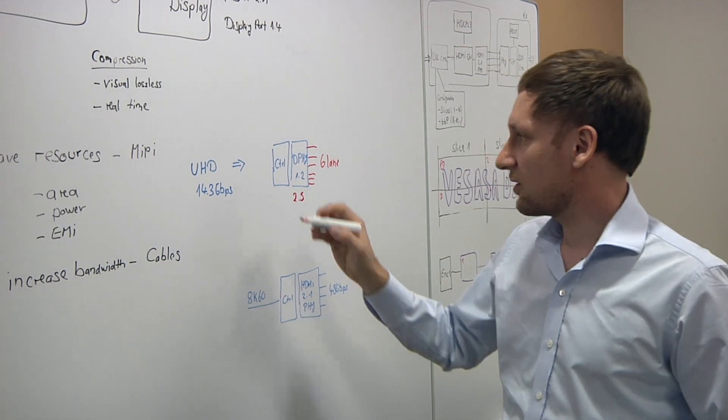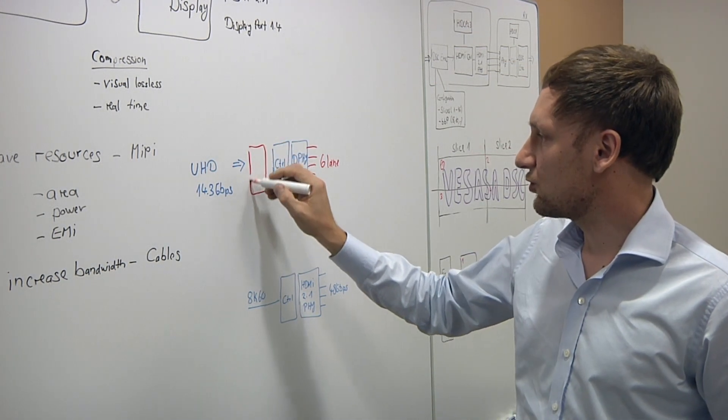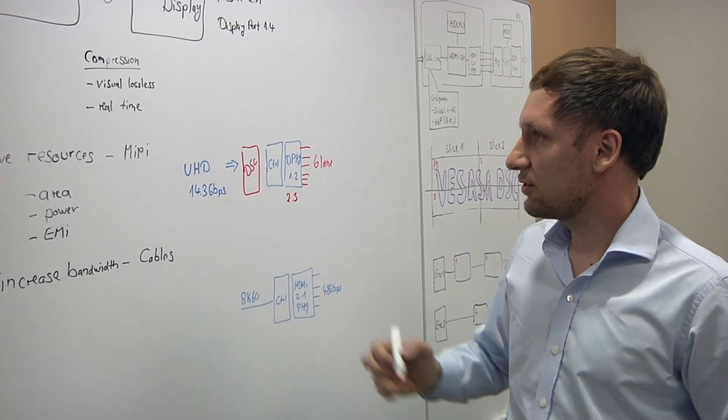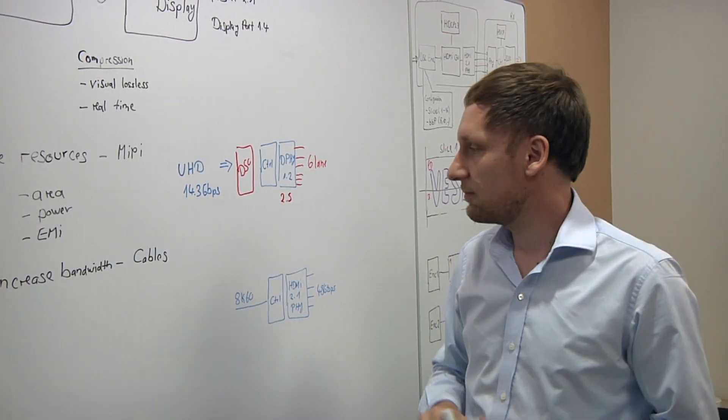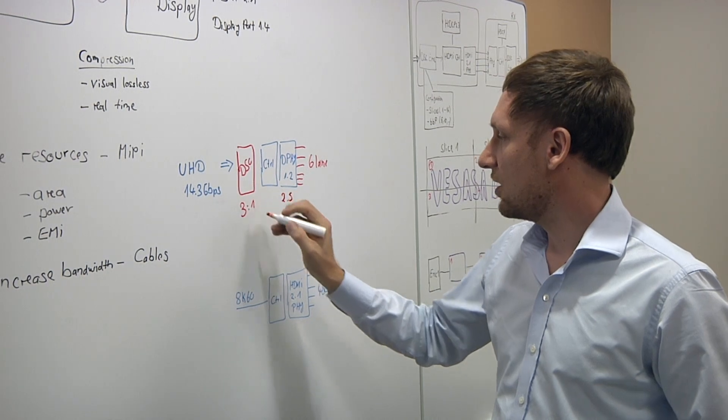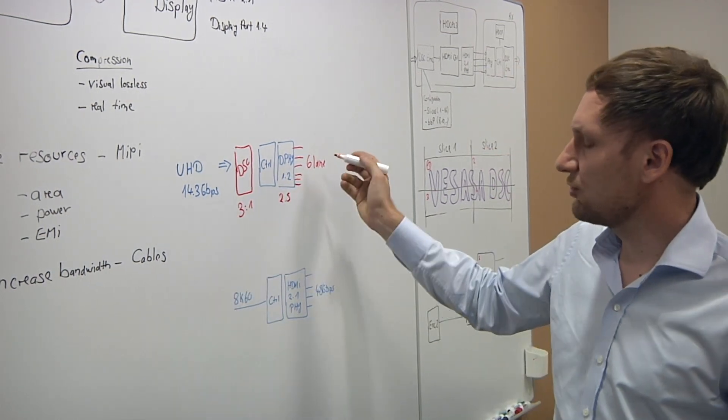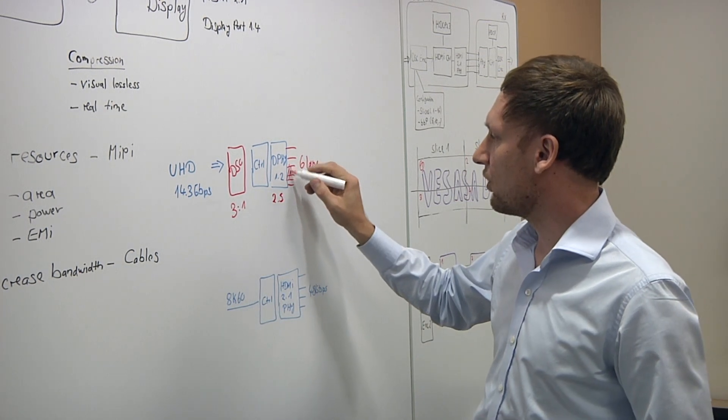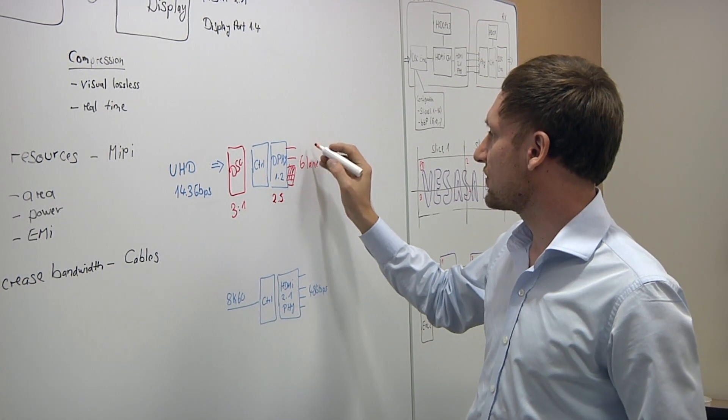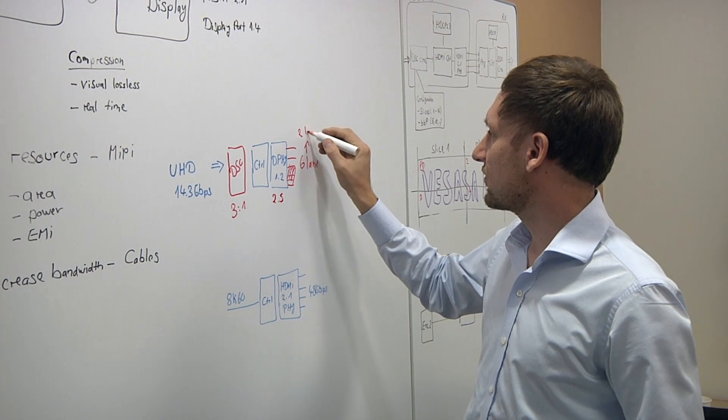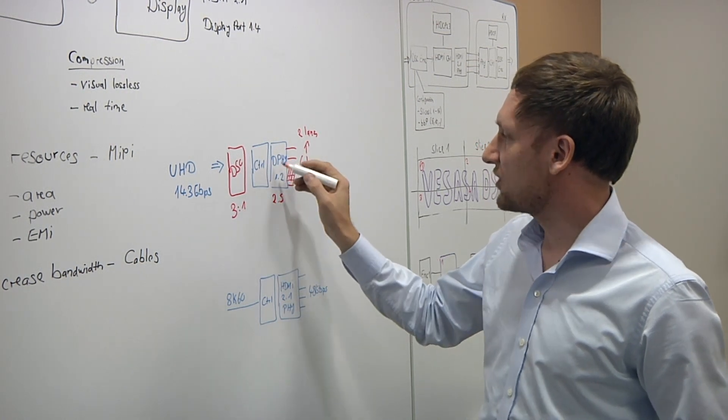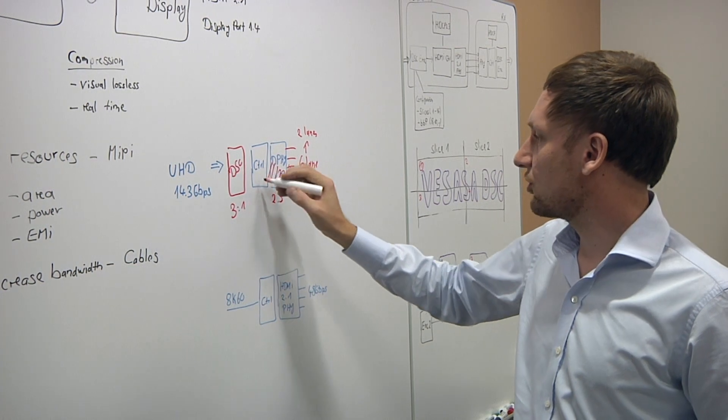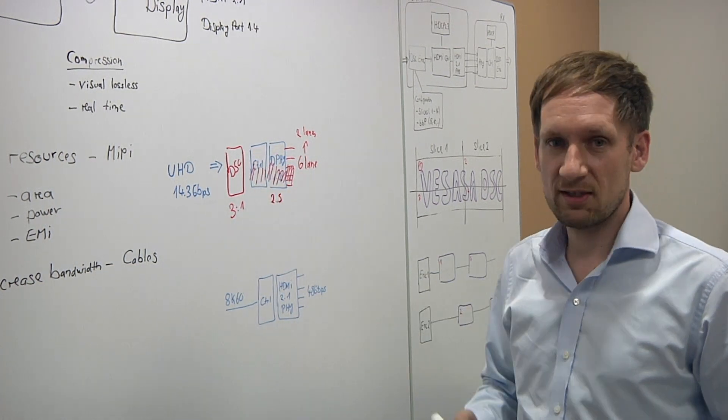So now if you're using a DSC component in here to do some data compression, you are able to compress the data by a factor of three. This means that you are able to reduce the amount of lane requirements from six to two. So you're able to save four of the lanes. So you go from six to two lanes.